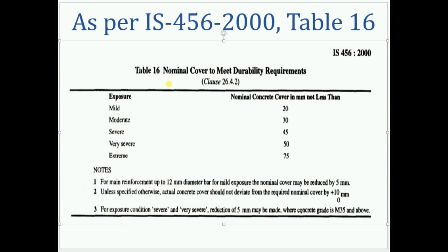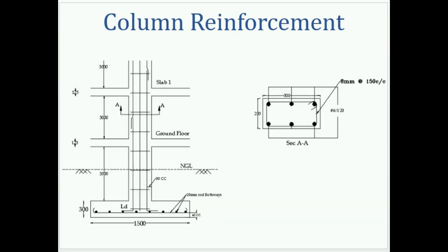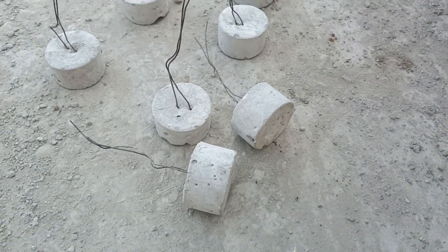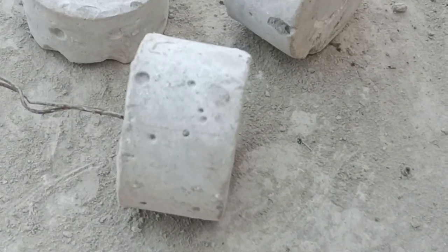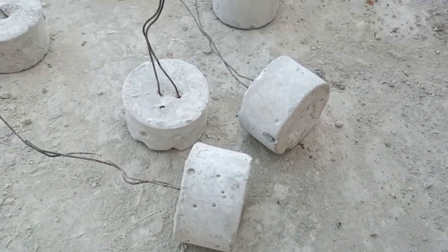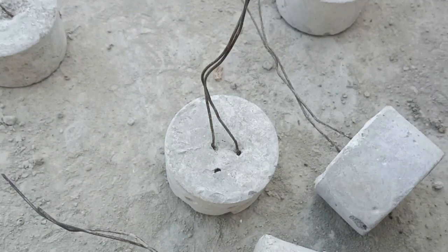This is the table from IS-456-2000, Table 16, which shows various exposure conditions and the minimum cover for each. But the question is: how is that covering actually achieved on site? These are small blocks of mortar which are prepared as per the cover requirement and then fixed to the steel reinforcement.